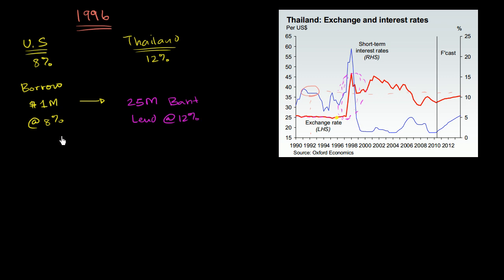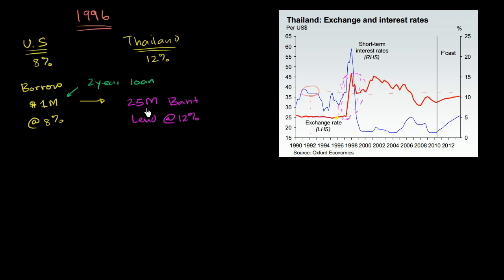For the sake of simplicity, this is an interest-only loan and the principal is due in two years — so we'll call this a two-year loan. Let's think about how you can make money as long as the currency stays stable, and how this loan will really burn you if the baht were to devalue relative to the US dollar. Every year you're going to make 12% on the 25 million baht that you lent — that's about 3 million baht a year.